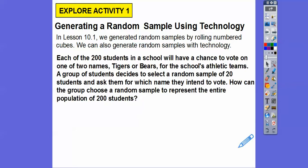So the example here is each of 200 students in a school will have a chance to vote on one of two names, the Tigers or the Bears for a school's athletic team. A group of students decides to select a random sample of 20 students and ask them which name they intend to vote for. So whether it's the Tigers or the Bears, that's their only choices. So how can the group choose a random sample to represent the entire population of those 200 students?